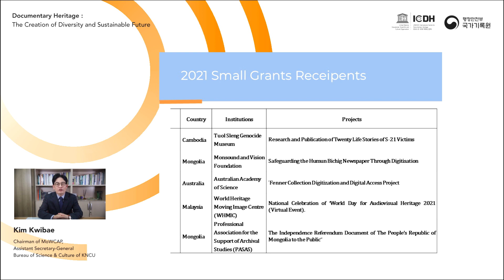The Australian Academy of Science received a grant for the Fenner Collection Digitalization and Digital Access Project. The manuscript collection of Professor Frank Fenner in the archives of the Australian Academy of Science covers the life and work of a distinguished Australian scientist and was added to the UNESCO Australian Memory of the World register in 2019. The collection records Professor Fenner's enormous contribution to scientific research and communication over more than eight decades. The grant will be used to digitize and enable digital access to select material, increasing the research relevance of these globally significant records from a local to an international research audience.